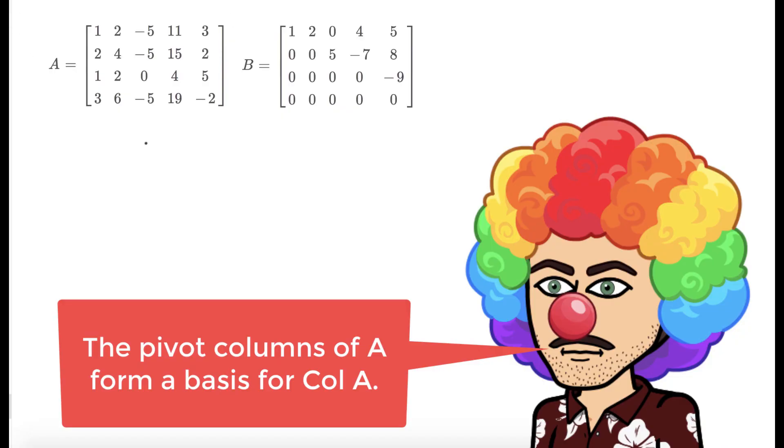So to find a basis for the column space of A, all we have to do is find the pivot columns of A. And luckily for us, B, which is row equivalent to A, is in echelon form, so it's easy to find the pivot columns.